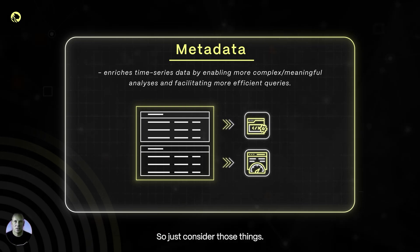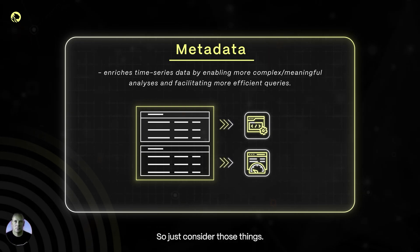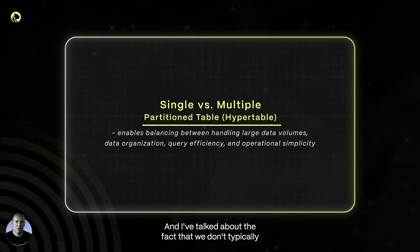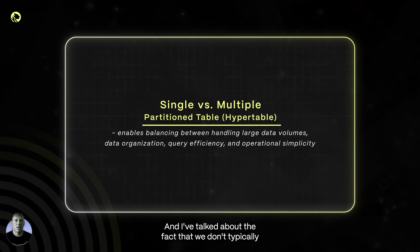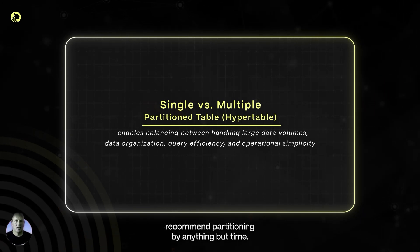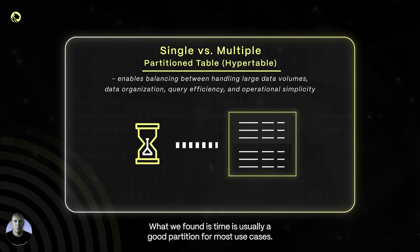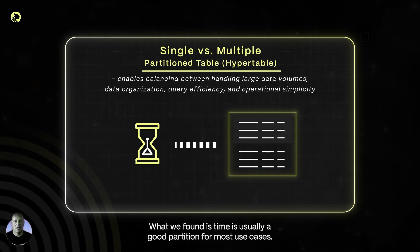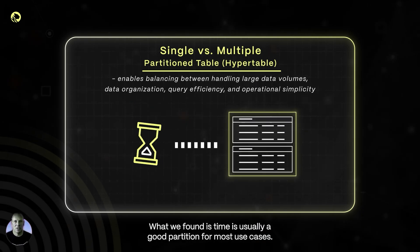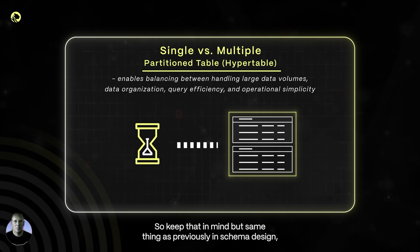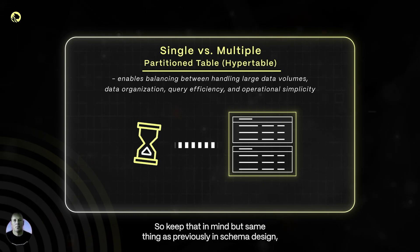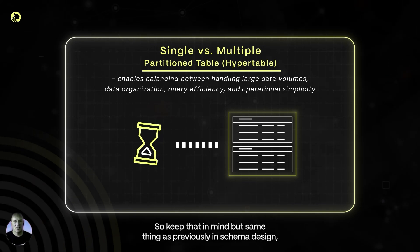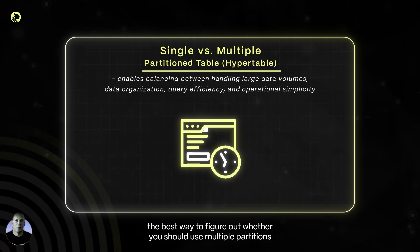Also consider single versus multiple partition tables. We don't typically recommend partitioning by anything but time — time is usually a good partition for most use cases. As with schema design, the best way to figure out whether you should use multiple partitions is to test it.